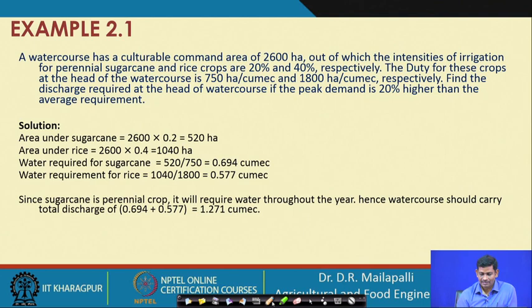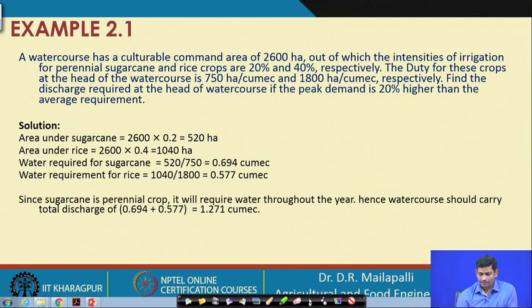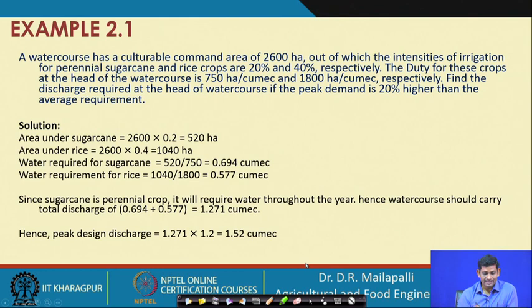The total discharge during the year is 1.271 Qmax. Since the peak demand is 20 percent higher than average, the peak design discharge = 1.2 × 1.271 = 1.52 Qmax. Thank you for this first lecture; we will cover more topics in the following lectures.